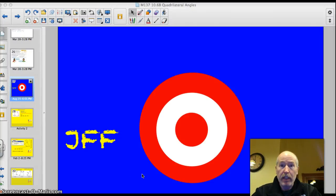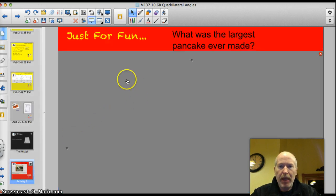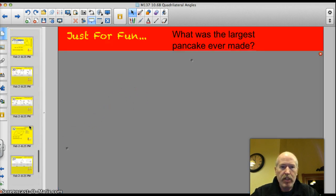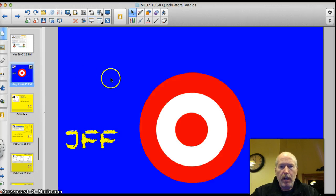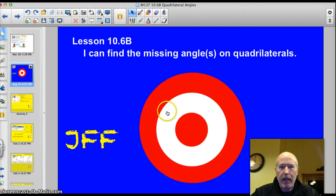Hey Valley Metal, welcome back to our second lesson on quadrilaterals. Tonight we're going to be finding the missing angle or angles. Here's a tasty trivia question for tonight: What was the largest pancake ever made? It's kind of a stunner actually. Our official target for tonight, lesson 10.6b: I can find the missing angle or angles on quadrilaterals.